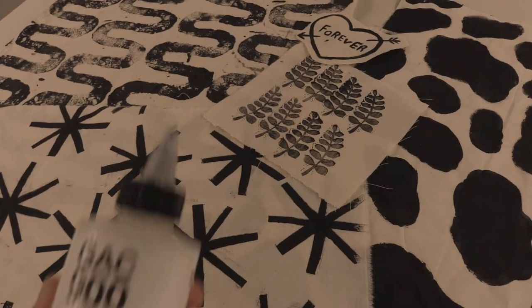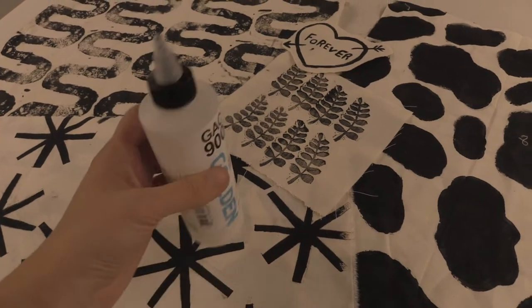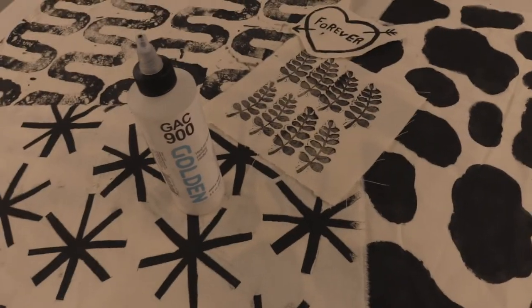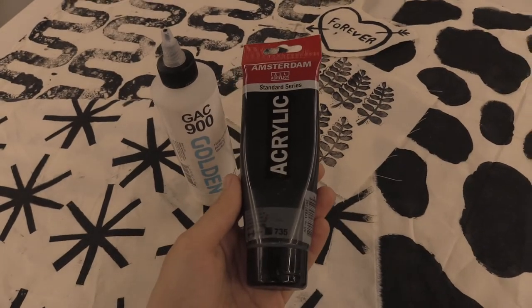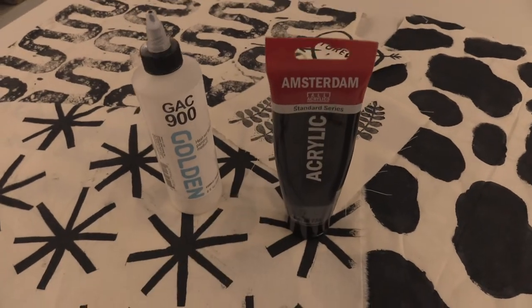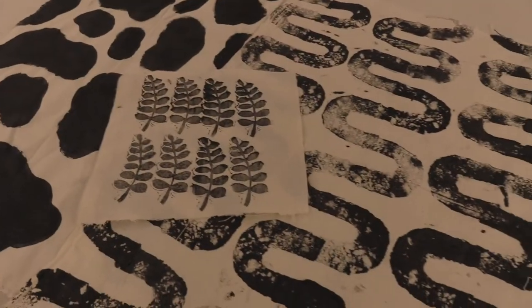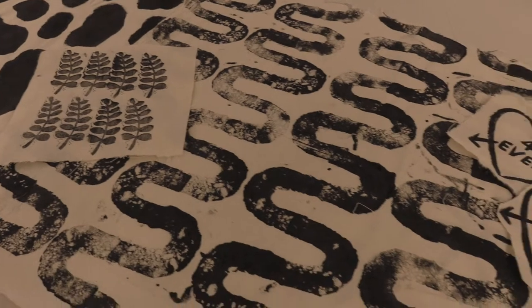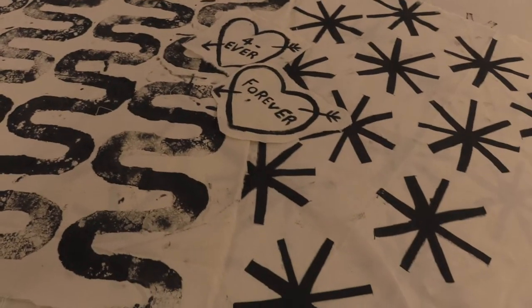In this video I'll show you how to use GAC 900, which is a medium that you can mix with acrylic paint in order to apply to fabric. Use with stencils, stamps, and hand painting to create fabrics such as this.